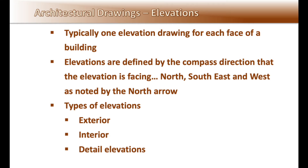Elevations are defined by the compass direction that the elevation is facing — like north, south, east, and west — as noted by the north arrow. Typical types of elevations would be exterior, interior, and detail elevations.